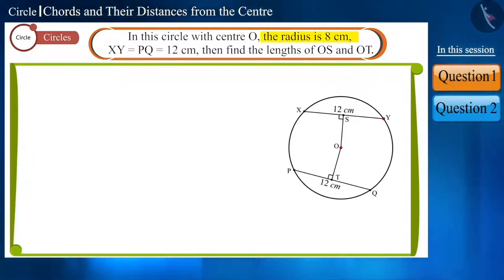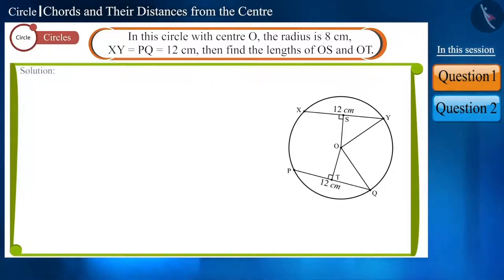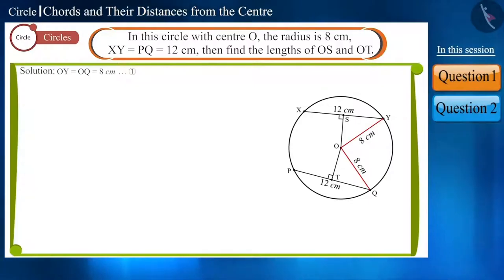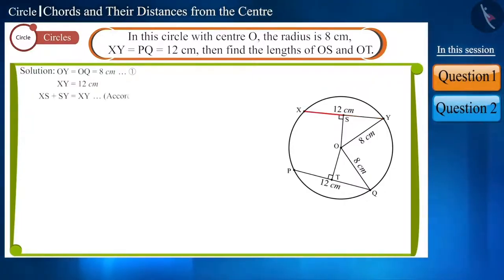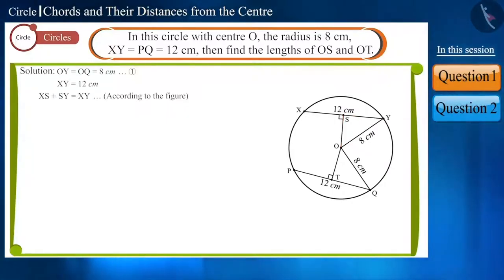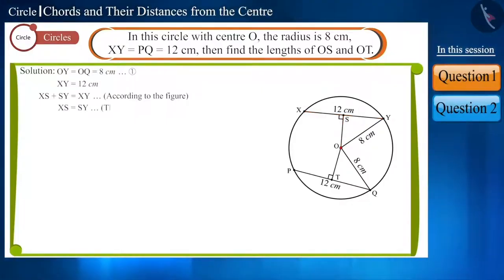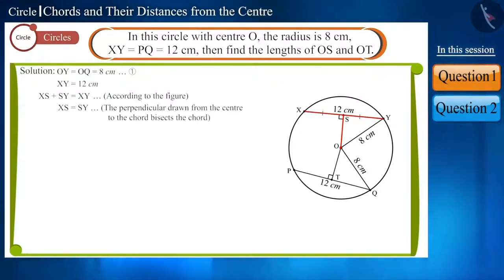We are given that the radius of the circle is 8 cm. If we join OY and OQ, then these are the radii of the circle, so OY and OQ will be equal to 8 cm. We are given that the length of XY is 12 cm. According to the figure, XY is formed by joining XS and SY, and OS is perpendicular to XY.